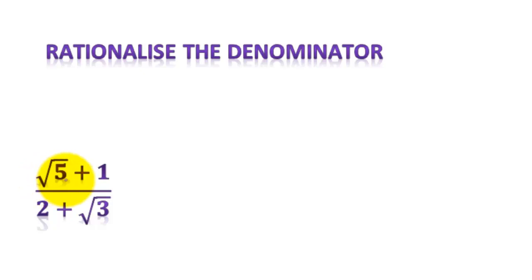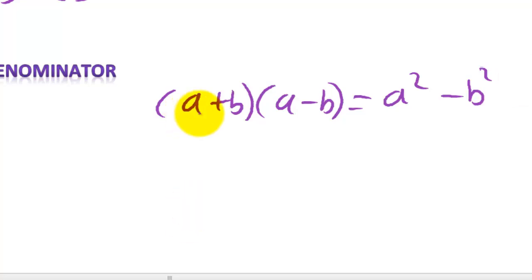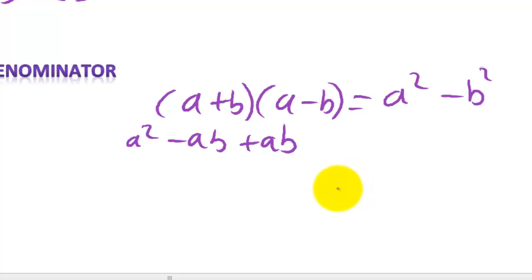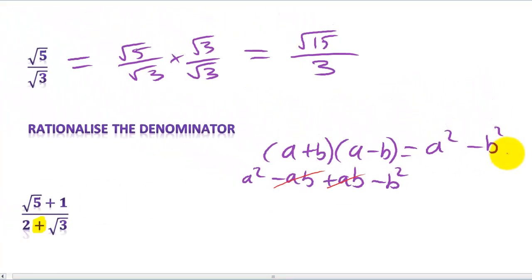The trickier type of rationalizing is where you've got additions and subtractions. We always change the sign of the middle term. The reason is we use the property: (a + b)(a − b) = a² − b². Let me show you: a × a = a², a × (−b) = −ab, b × a = +ab, b × (−b) = −b². The −ab and +ab cancel, leaving a² − b². You now have square numbers, so any square roots disappear. Whatever the sign in the middle, we multiply by the expression with the opposite sign.